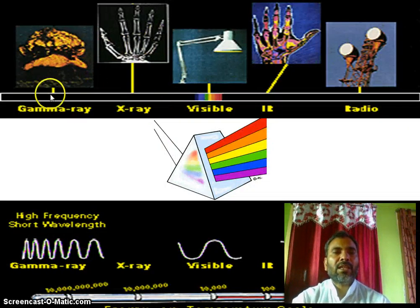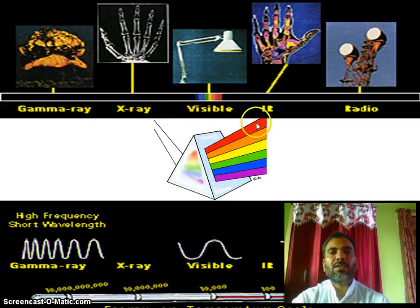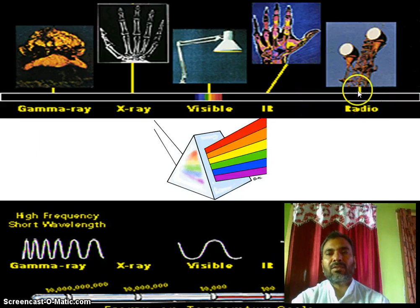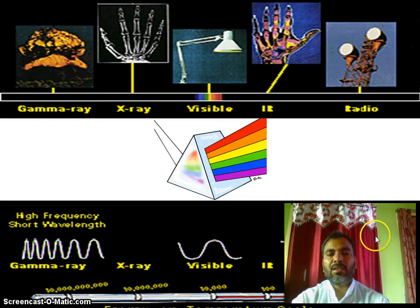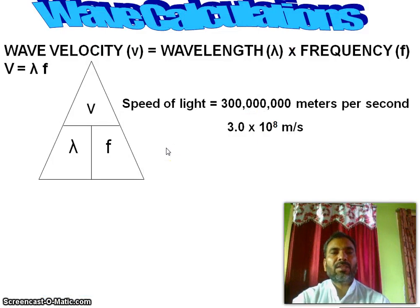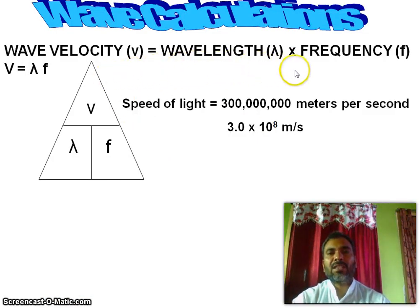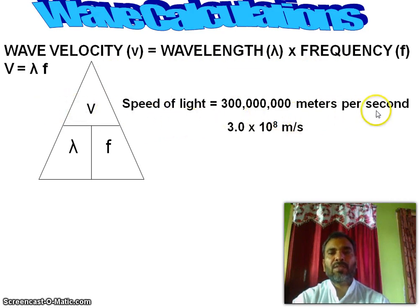Looking at the spectrum: gamma rays, X-rays, visible, IR, and radio. Wave velocity equals wavelength times frequency. The speed of light is 3.0 × 10⁸ meters per second.